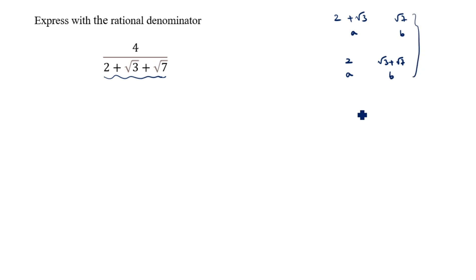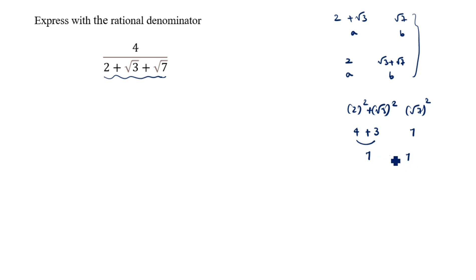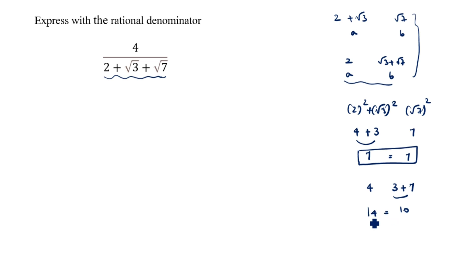We need to decide which grouping to use. For the first option: a² = 4, b² = (root 3)² + (root 7)² = 3 + 7 = 10, but a² = 4 which does not equal 10. For the second option: a = 2 plus root 3, b = root 7 — here 2² = 4, (root 3)² = 3, (root 7)² = 7, so 4 + 3 = 7, and 7 = 7. This confirms the correct grouping is a = 2 plus root 3 and b = root 7.